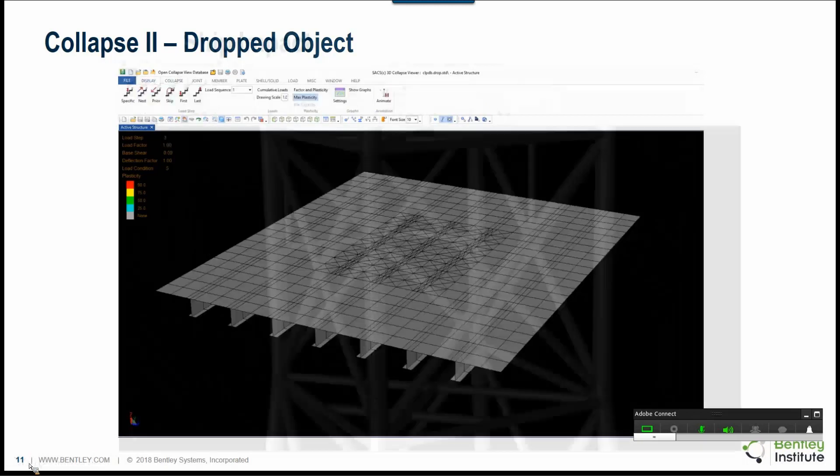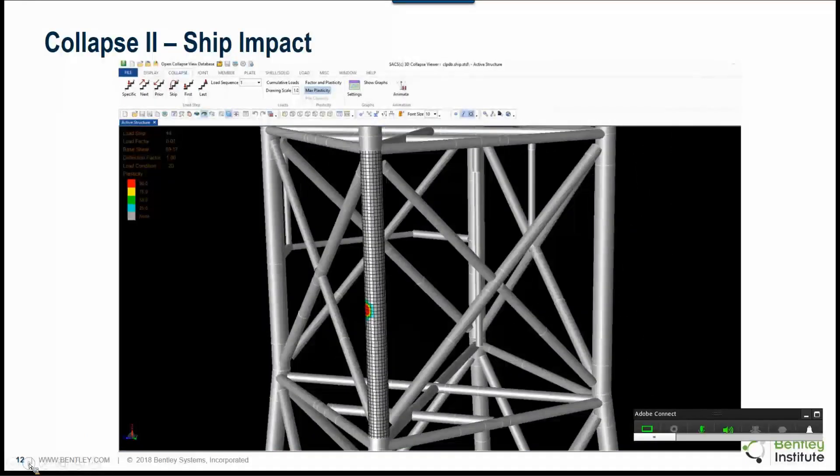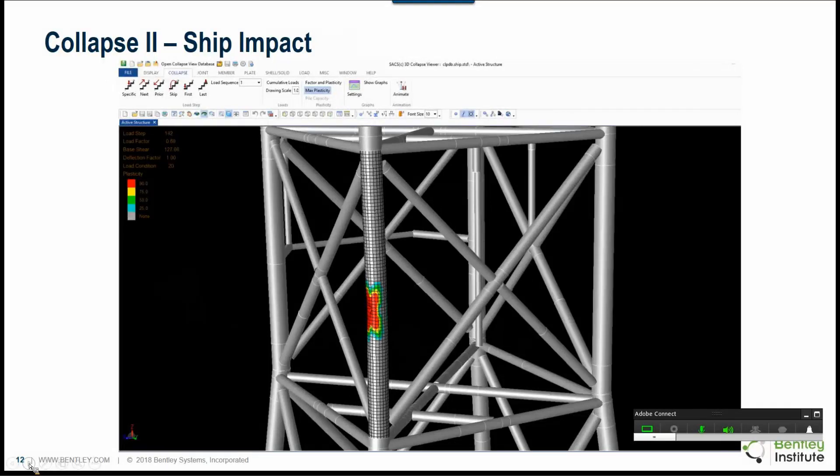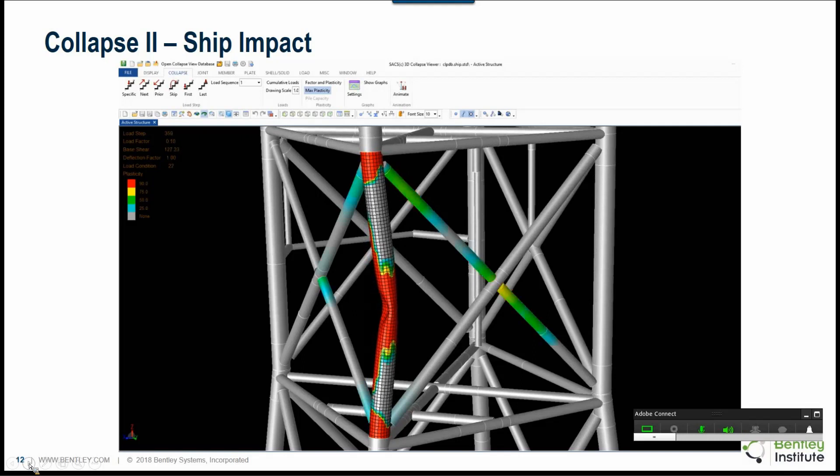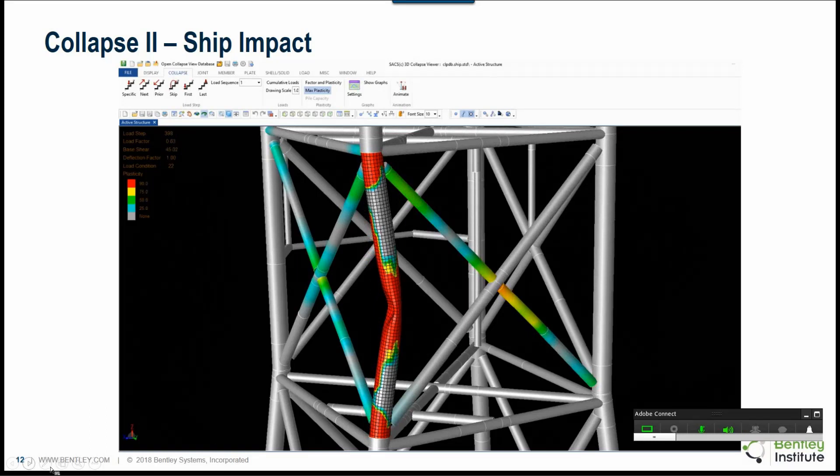This next video is for ship impact analysis. Here again, we have meshed the impacted leg to account for the local deformation and the local indentation and the resulting reduction in the moment carrying capacity which could under certain circumstances lead to the failure of the whole structure. Again, you get very large deformations.